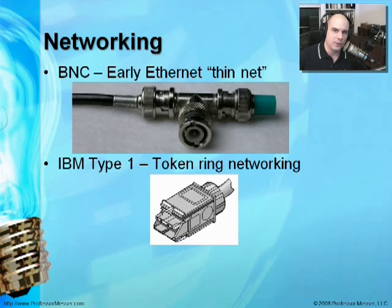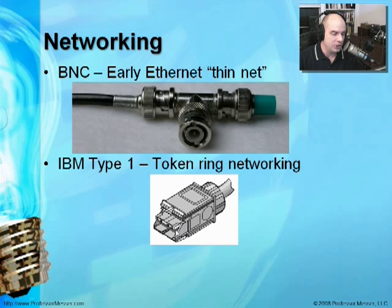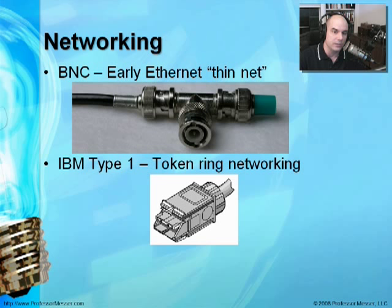Another type of connection we don't see a lot of anymore is one that was even thicker and harder to work with — used for token ring networks in early networking environments. This is called an IBM Type 1 Universal Data Connection. What was nice about this connection was it was really solid. You could flip it around and the two ends would connect to each other and really stay there — you had to really push on them to get them apart. It worked really well for token ring.